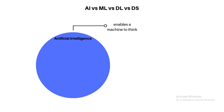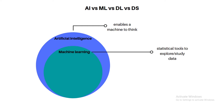Now I am talking about machine learning. Machine learning is a subset of AI. We need to provide statistical tools, explore the data, and study the data. In machine learning, we have three approaches: first, supervised machine learning; second, unsupervised machine learning; and third, reinforcement machine learning or semi-supervised machine learning.